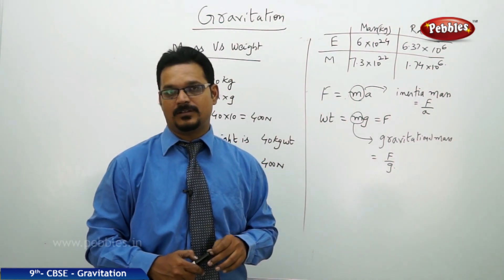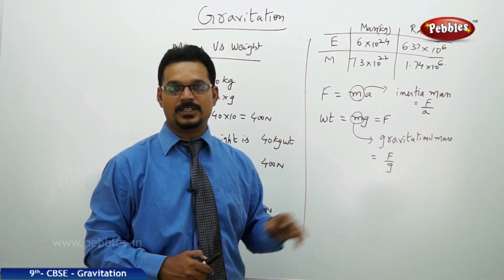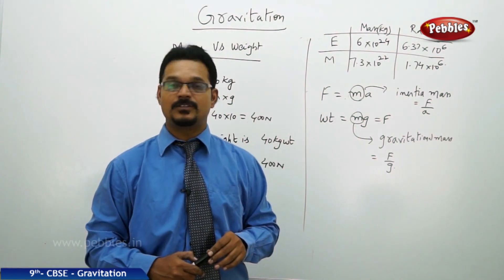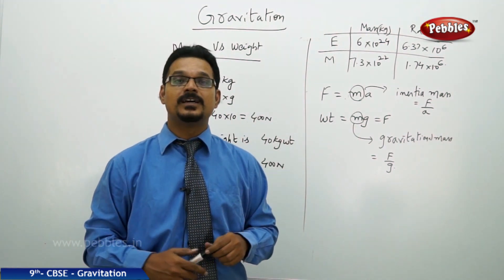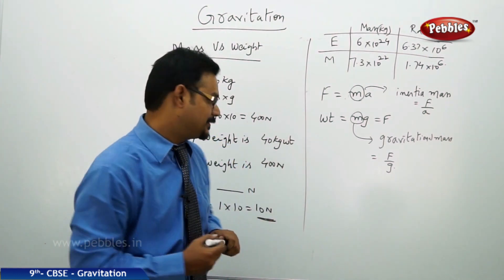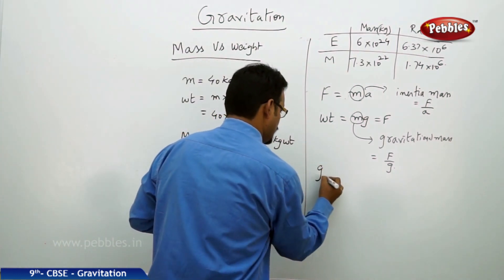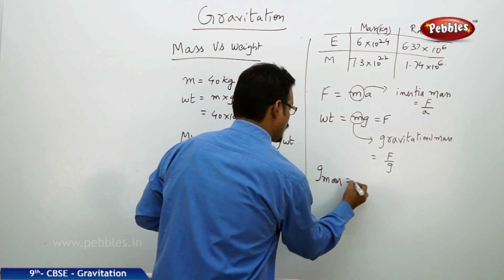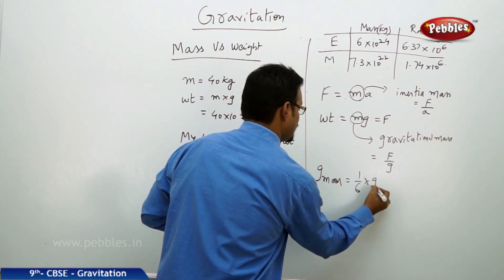Scientists observed that on the moon, the g value is not 9.81, but actually it is one by six times of g of the Earth. So g on the moon equal to one by six times of g on the Earth.